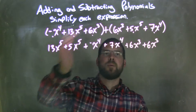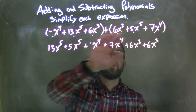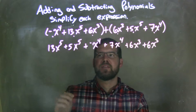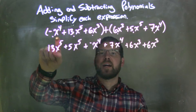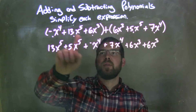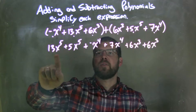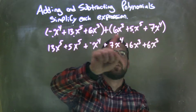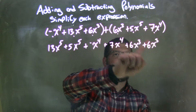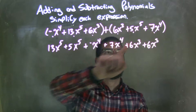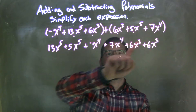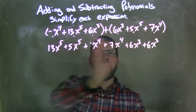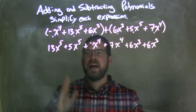I put little dots there to mark which ones I brought down. We should have everything — let's double check. Negative x to the fourth is right there, 13x to the fifth is right there, 6x to the third is right there, 6x to the third is right there, 5x to the fifth is right there, and 7x to the fourth is right there. Highest degrees came first.